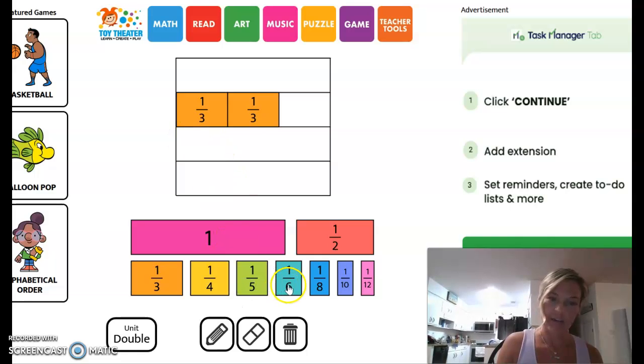I'm going to go to the sixths here. So I drag it up. Two one-sixths, three one-sixths, and four one-sixths. Okay, so now I can see that four-sixths is equal to two-thirds.